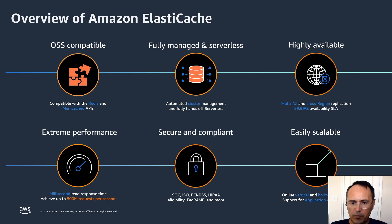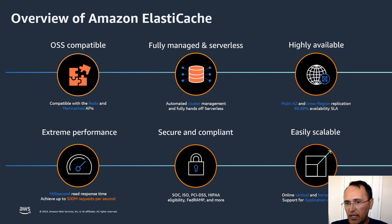With the serverless option, you just pay for consumption. Both serverless and instance-based ElastiCache are highly available, secure, and extremely fast. The instance-based approach can scale as well, but you manage it yourself — setting up your own thresholds and autoscaling — which could result in over- or under-provisioning. On the other hand, the serverless option scales instantaneously based on demand.